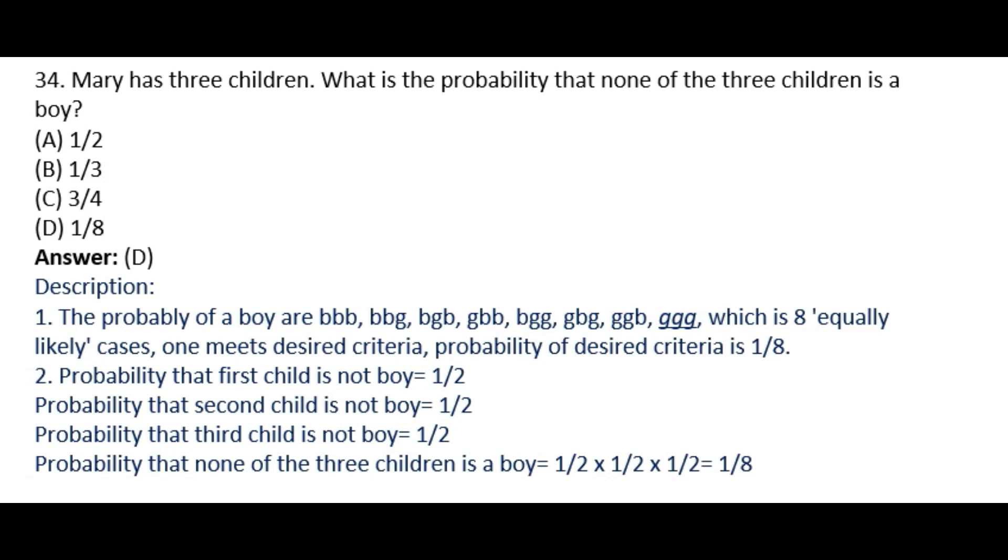This is an interesting problem that came in a past UGC net exam. Mary has three children. What is the probability that none of these three children is a boy? The options given are: one by two, one by three, three by four, and one by eight.